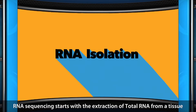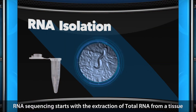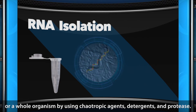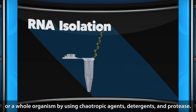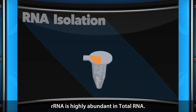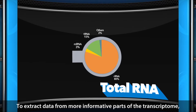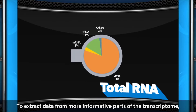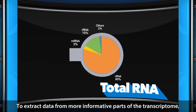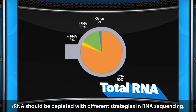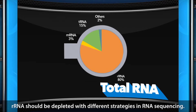RNA sequencing starts with the extraction of total RNA from a tissue or a whole organism by using chaotropic agents, detergents, and protease. rRNA is highly abundant in total RNA. To extract data from more informative parts of the transcriptome, rRNA should be depleted with different strategies in RNA sequencing.